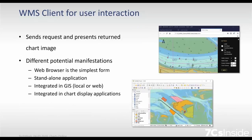To interact with chart server we need a WMS client — the application that sends requests and usually also presents the returned chart images, operated by the user. There are different potential forms of a WMS client. The easiest client is a web browser — that's the simplest form. You could enter a request in the address line of your browser, and if the server address and remaining parameters are correct, it would immediately return an image displayed in the web browser.